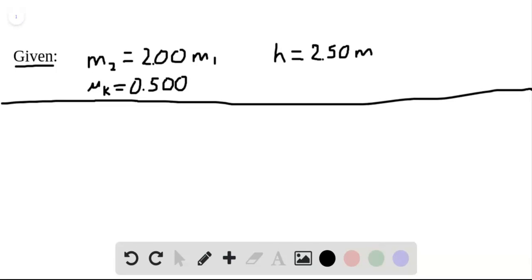Our question says to look at figure 9-67, which shows block 1, which has a mass of M1 equal to 2 times the mass of block 2. These are sliding on a frictionless ramp which has a height of 2.50 meters.